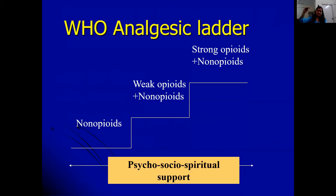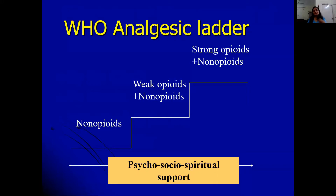The ladder can go up and down. If a patient with a neck mass and severe pain starts at step three, undergoes chemotherapy for lymphoma, the mass dissolves and pain decreases — we can move down to step one or stop altogether. Psychosocial and spiritual support is added as an umbrella over the entire ladder, addressing all dimensions of pain at every step.